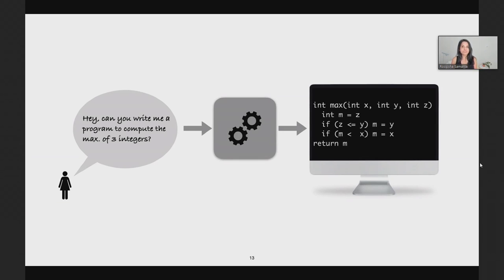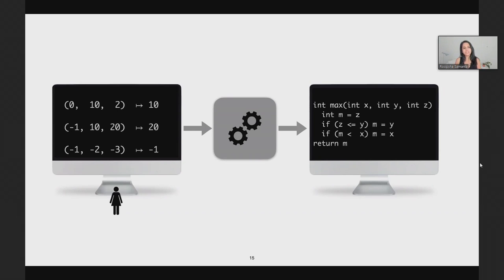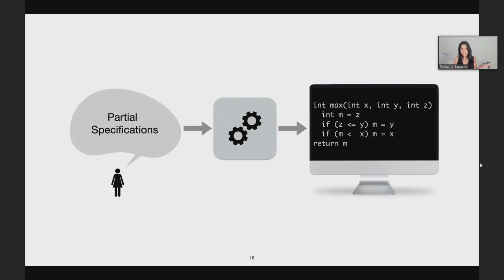For instance, we might ask the user to just state the problem in plain old English: "Can you write me a program to compute a maximum of three integers?" Or maybe the user can give the synthesizer some more information such as the name of the function, its type signature, and so on — and you know that Copilot can handle information like this. Or perhaps we give a few examples of the expected input-output behavior of the program. Now, all these specifications are instances of partial or incomplete specifications, and these tasks are certainly easier than writing the program itself.